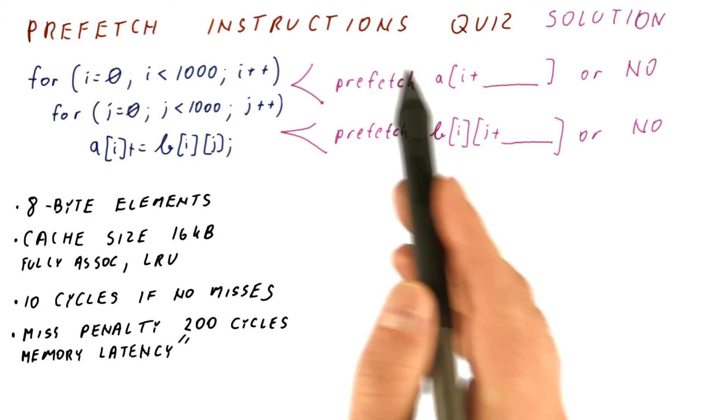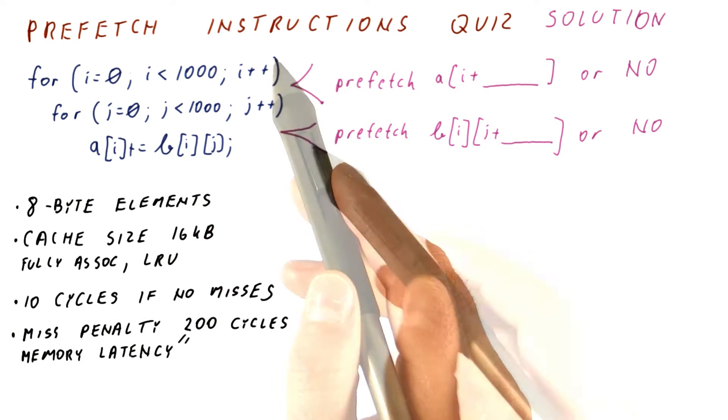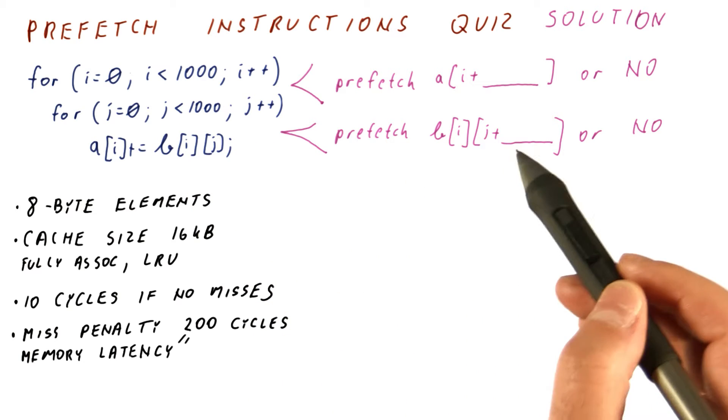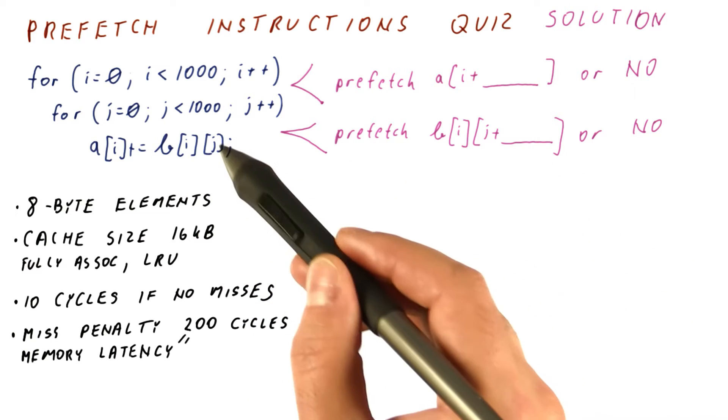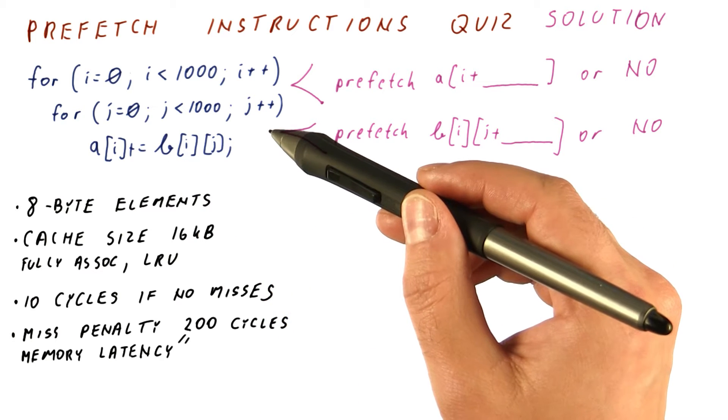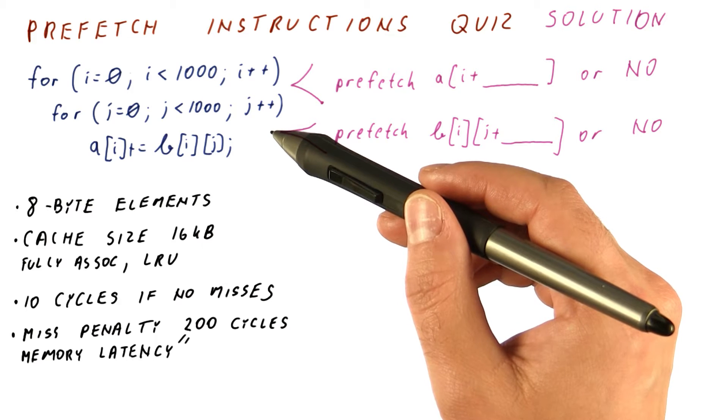Let's look at the solution to our prefetch instructions quiz. First, let's examine the inner loop and the prefetch distance for fetching elements of the B array. We were told that each iteration takes 10 cycles if there are no misses, and we want to eliminate misses.